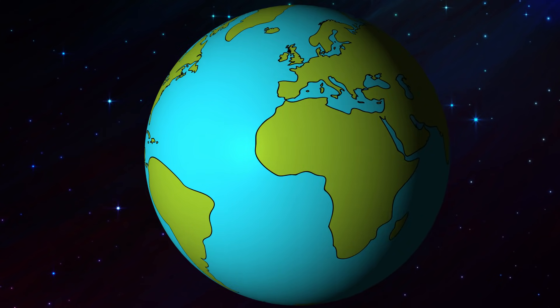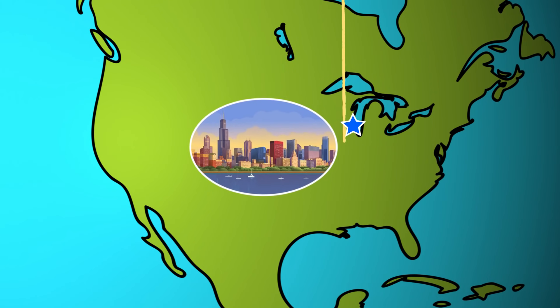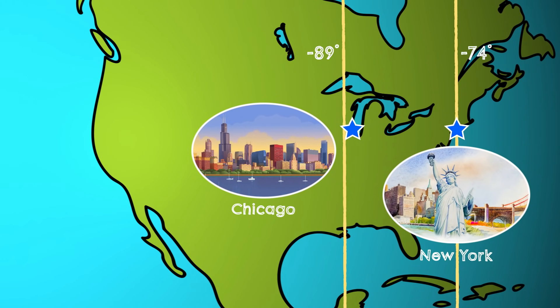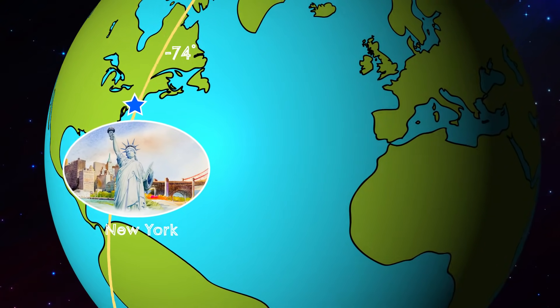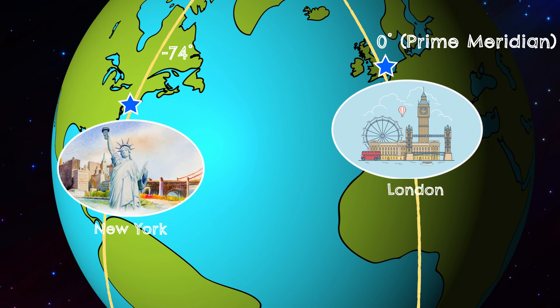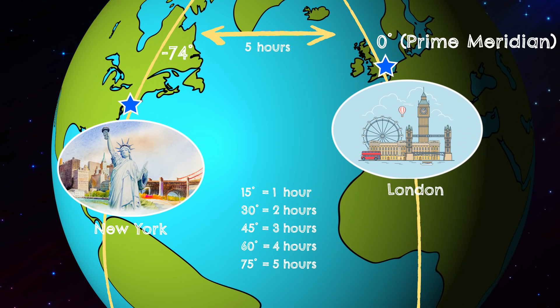So two cities like Chicago and New York, which are roughly 15 degrees apart, have time zones one hour apart. So when it's 3 p.m. in New York, it's 2 p.m. in Chicago. London is about 75 degrees away from New York, and sure enough, its time zone is five hours ahead of New York.